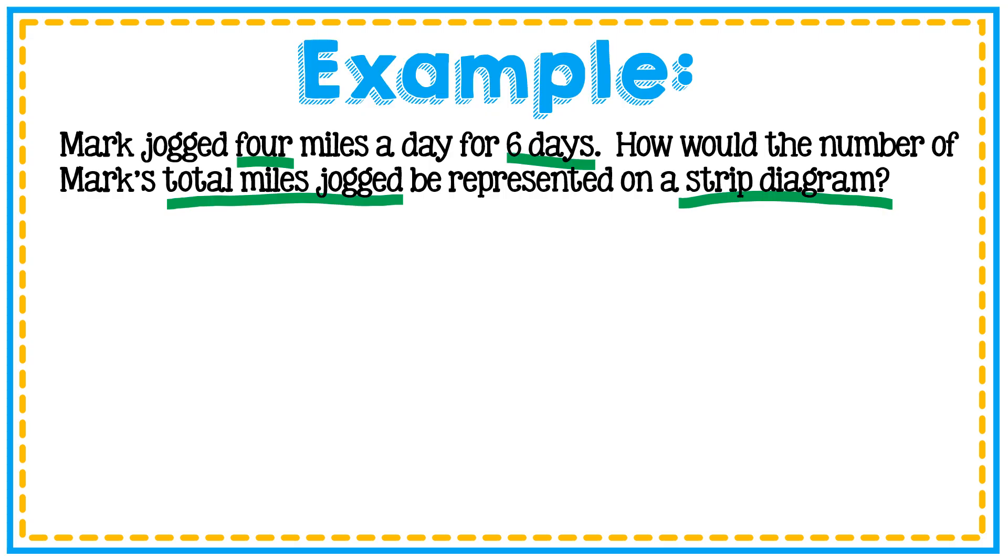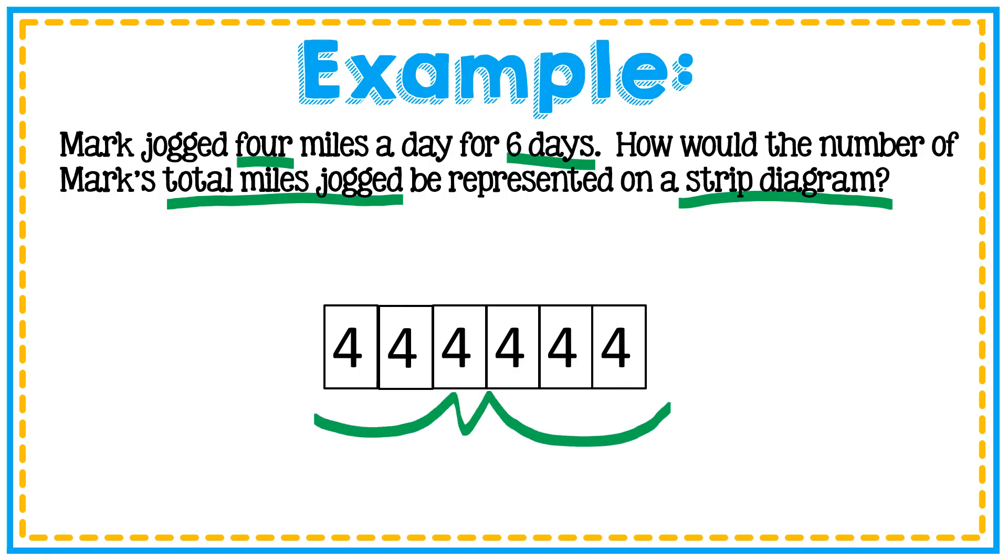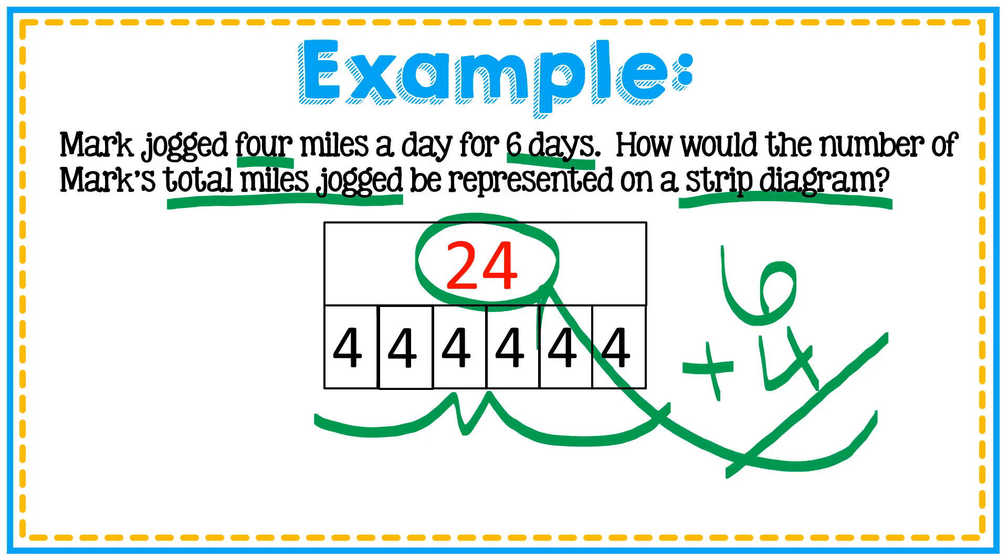In one day, he did four miles. The next day, he did four miles. The next day, he did four miles all the way up to six days. So when I add these fours, what I'm going to get is his total. I can add four six times or I can take six days of jogging times four miles each day and I can find a total of 24. So I was missing my whole and I found it by multiplying six times four.